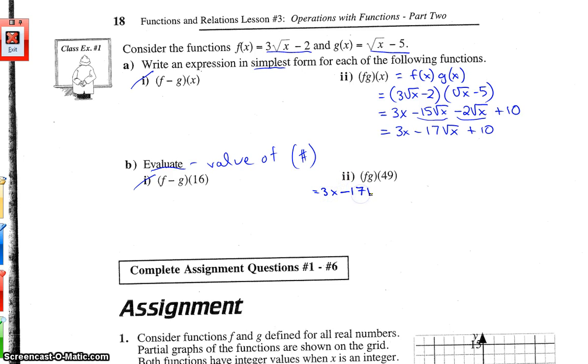3x minus 17 root x plus 10 is our fg(x) function. And we're trying to find fg at 49. So in for x goes 49. And then you need to simplify that. Let's see, 3 times 49, 120, 27, 147, minus 17. The square root of 49 is 7. So that's going to be multiplied by the 17 on the next step. And then we should be able to put this in the calculator and get a final answer. So we arrived at 38 for the product at x equals 49.